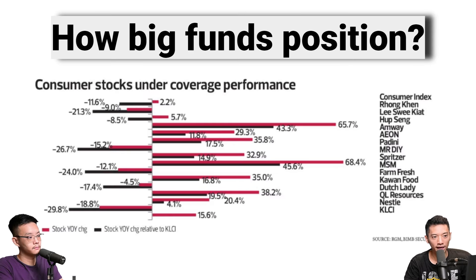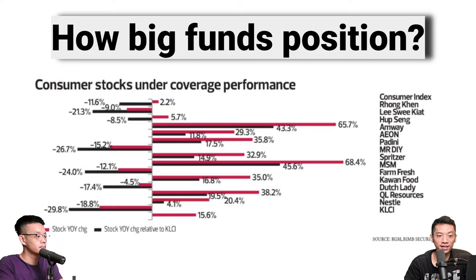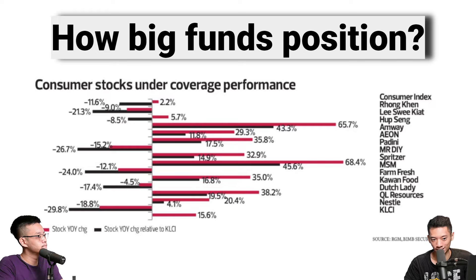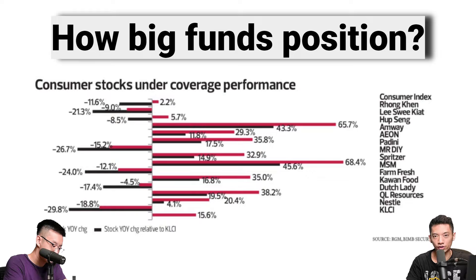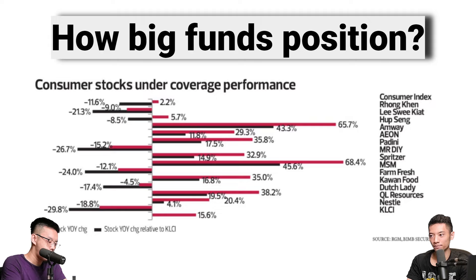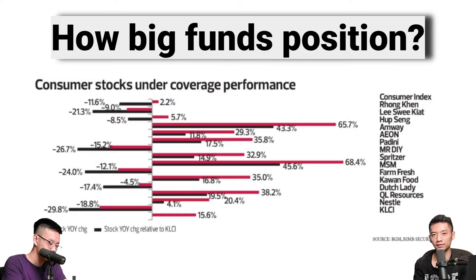Big funds are now rotating into consumer stocks instead of banks. Some of the consumer counters include CCK, Farm Fresh, and even Mr. DIY starting to turn up a little. Currently, 99 Speedmart, which is up for listing, is also going up. The big funds are focusing on this sector because of the ringgit strengthening, and also because bank valuations are considered high for them. So consumer comes to mind as an alternative besides telco and utility.